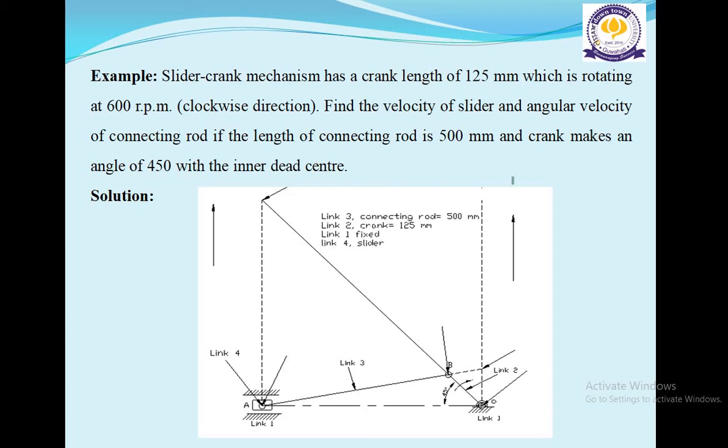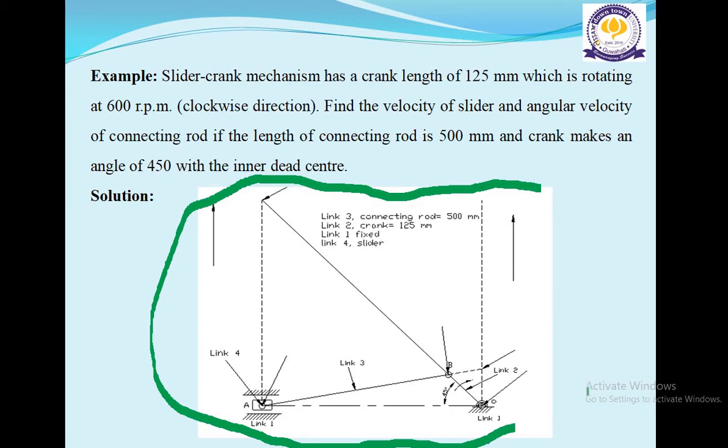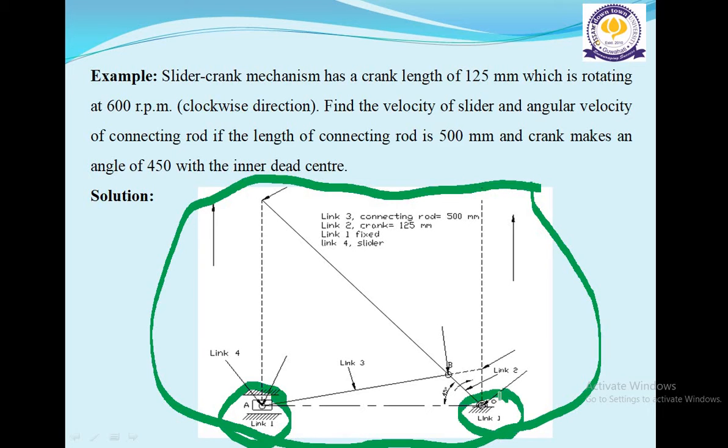Here you can see the figure of this problem. Link 1 is fixed. This is link 2. Link 3 is the connecting rod of 500 mm. Link 2 is the crank of 125 mm, and link 4 is the slider.